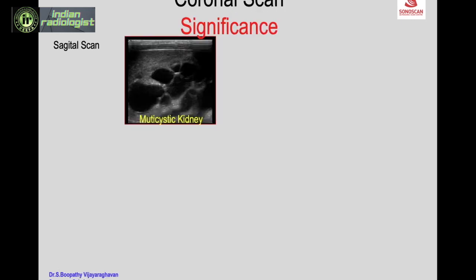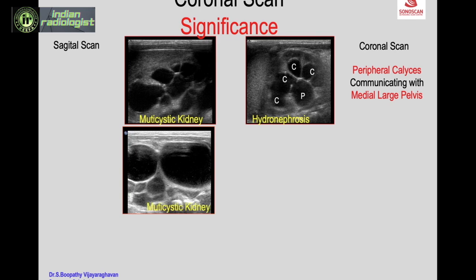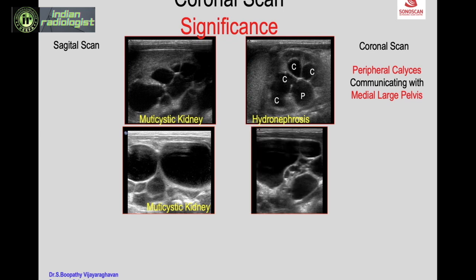The significance of certain diagnoses is section-specific — they will be seen only in a particular section. Here we see how the coronal scan is significant. In a sagittal scan you may see multiple cysts in the kidney, mimicking a multicystic kidney. But when you do a coronal scan, you see the typical appearance of hydronephrosis: peripheral dilated calyces communicating with the more dilated, medially placed large renal pelvis. Another example shows multiple non-communicating cysts of varying size — typical of multicystic kidney — confirmed on coronal scan.